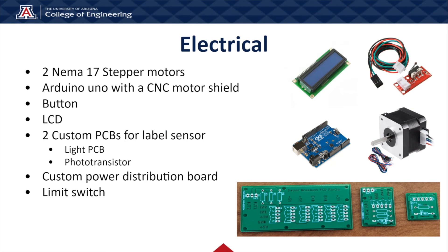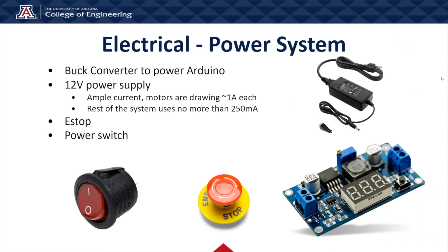As for our electrical system, we have two stepper motors and an Arduino Uno with a CNC shield to run them. We have a button, an LCD, and two custom PCBs for the label sensors — one with a phototransistor and one with a light source. These are pointed directly at each other, so when the phototransistor is unable to receive light from the light source, we know a label is in position. We have a custom power distribution board providing 5V to multiple outputs. We also have a limit switch to detect when a slide is in the machine. Our power system uses a buck converter to downstep the 12V input to 5V for the Arduino. We have a 12V power supply, an e-stop button for emergencies such as label jams, and a standard power switch to turn the machine on and off.